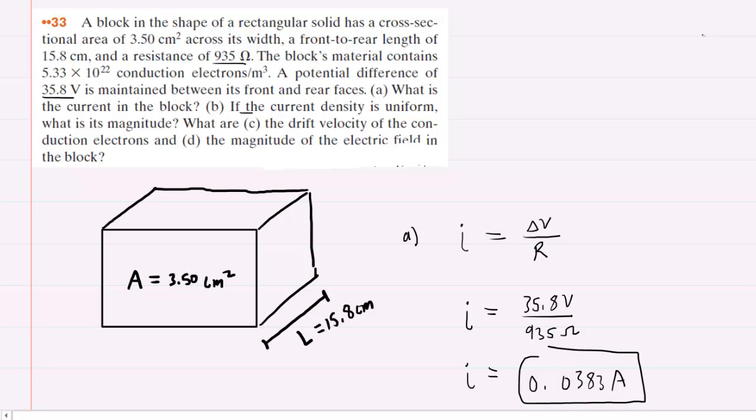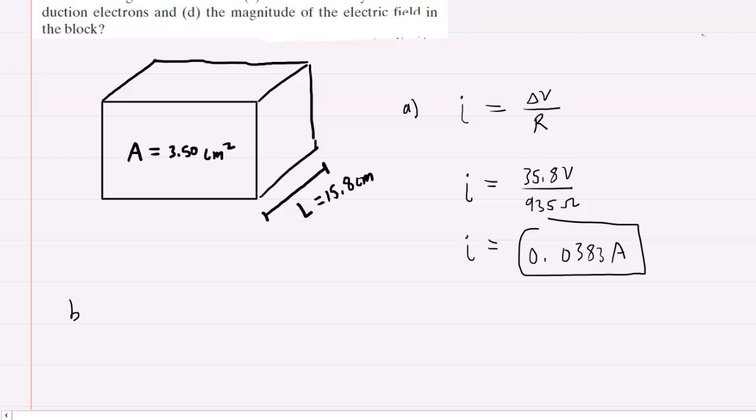In part B, it says if the current density is uniform, then what is its magnitude? As long as the current density is uniform, we can say that the current density J equals the amount of current going through the block divided by the block's cross sectional area.